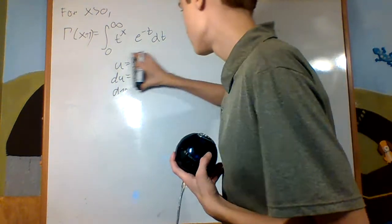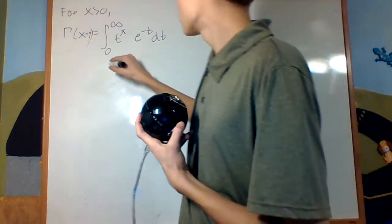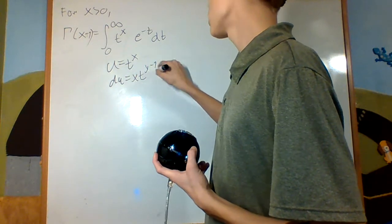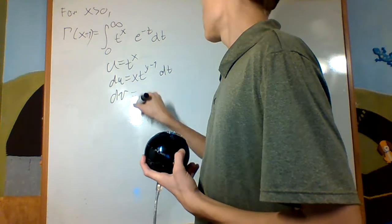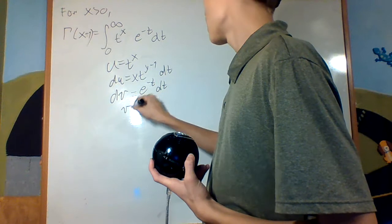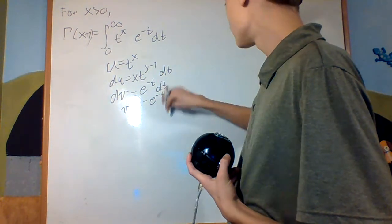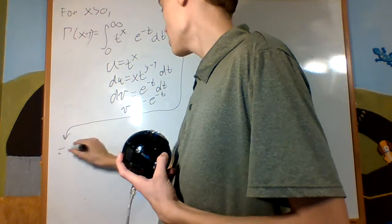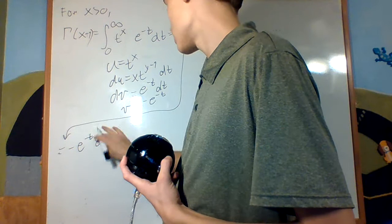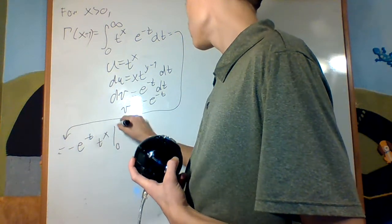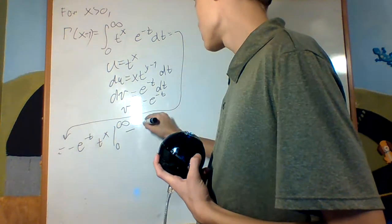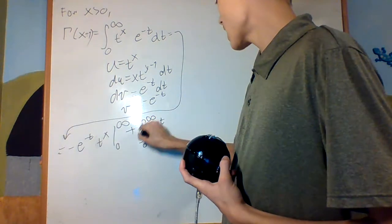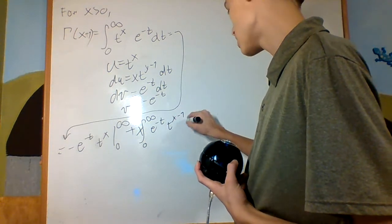So that's the intuition. Let's formally prove it. We make u equal to t to the x, so that du is x times t to the x minus 1 dt, and dv is e to the negative t dt, so that v is negative e to the negative t. This gives us u times v — that is, t to the x times negative e to the negative t — evaluated from 0 to infinity, minus the integral from 0 to infinity of v times du, which is negative e to the negative t times x times t to the x minus 1 dt.